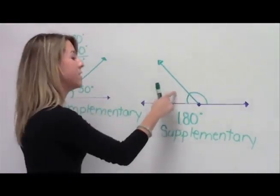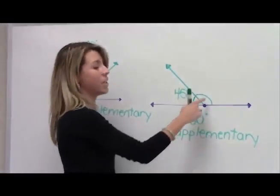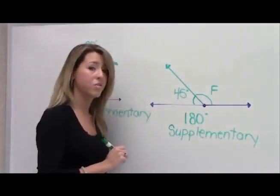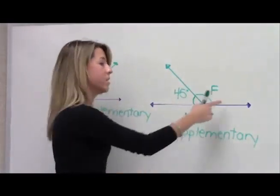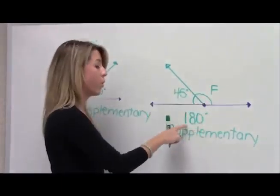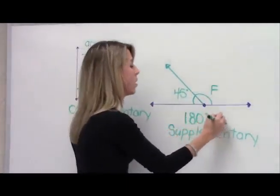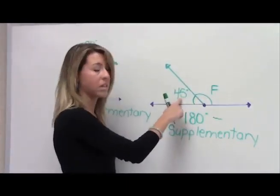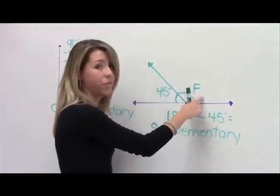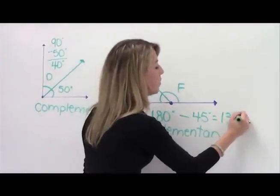If I know that this angle measures 45 degrees and I don't know the measure of angle F, I can use my knowledge of subtraction to help me find this unknown measure. Because I know supplementary angles always equal 180 degrees, 180 degrees minus the 45 degrees of this angle means angle F must be equal to 135 degrees.